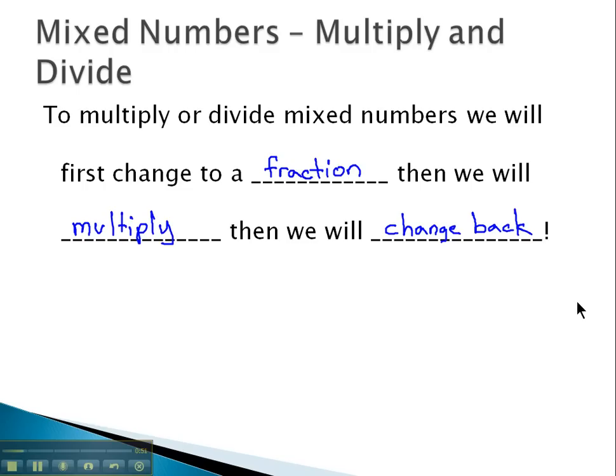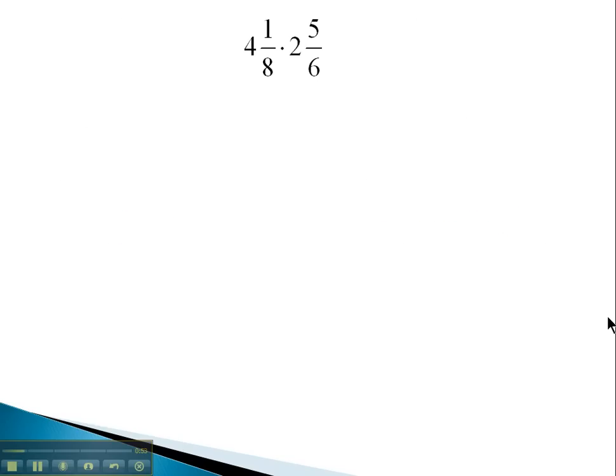Let's take a look at a multiplication example. Here, we're multiplying 4 and 1 eighth by 2 and 5 sixth. Rather than multiplying the mixed numbers, with multiplication and division, we'll find it's easier to convert to improper fractions. Moving around the first mixed number, 8 times 4 is 32, plus 1 gives us 33 eighths, times moving around the second mixed number, 6 times 2 is 12, plus 5 is 17 sixth.